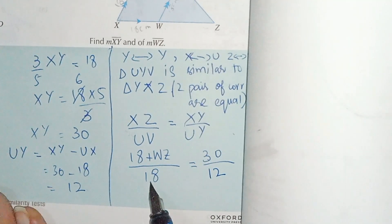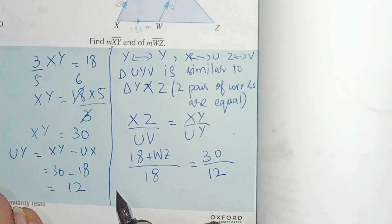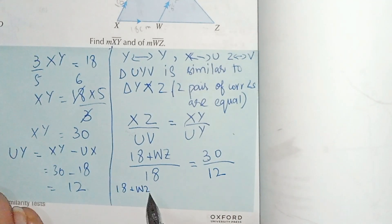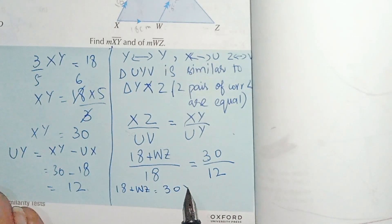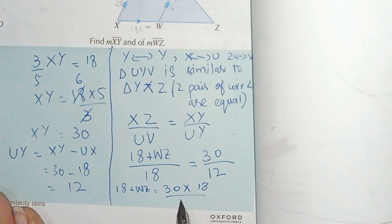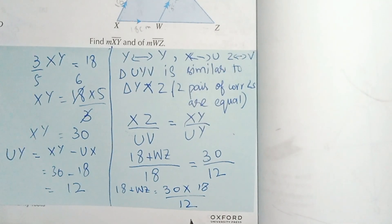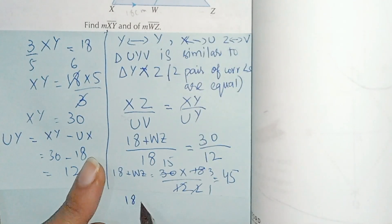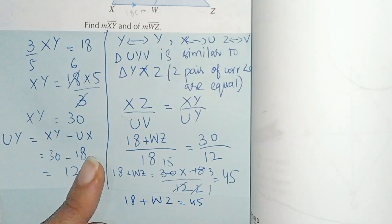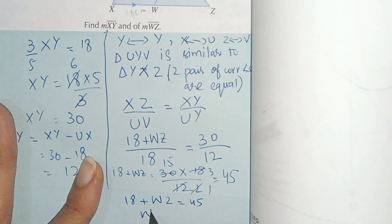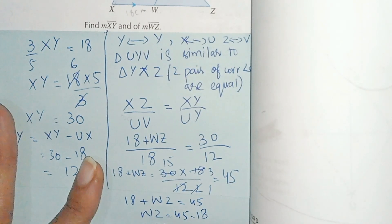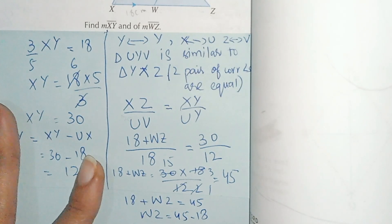Now we cross multiply to find WZ. Setting up the equation with 18 plus WZ and simplifying, by subtracting we get WZ equals 27 centimeters.